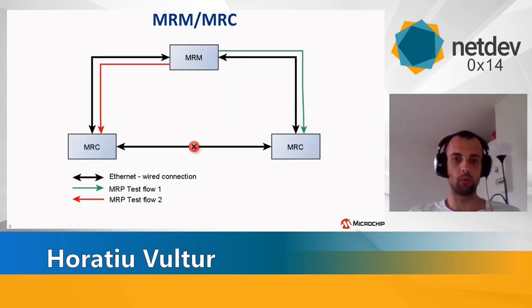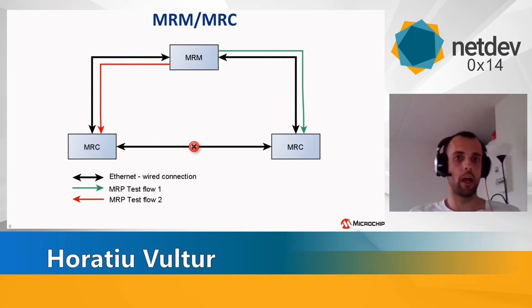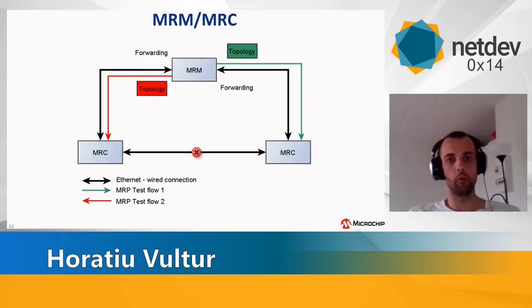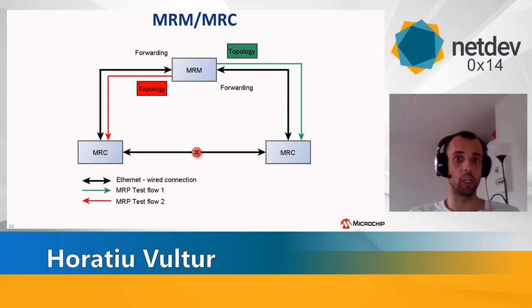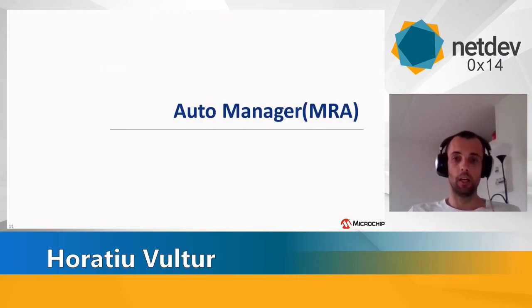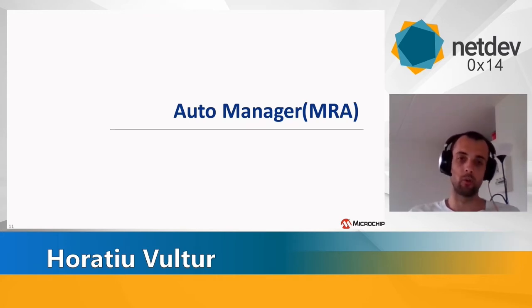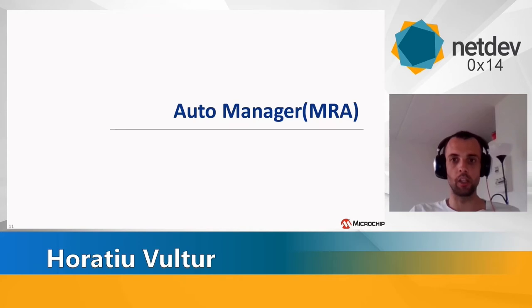But if one of the links between the clients goes down, the test frames stop coming back to the manager and it will detect this. Then it will set the blocked port in forwarding state and send topology change frames on both rings to notify the clients that the topology has changed, so they clear their forwarding database again. With a regular manager, if the manager dies or is removed, you need to manually configure a client to behave as a manager. But with AutoManager, they can automatically detect when to behave as a manager or a client, so you can have a ring only with AutoManagers.